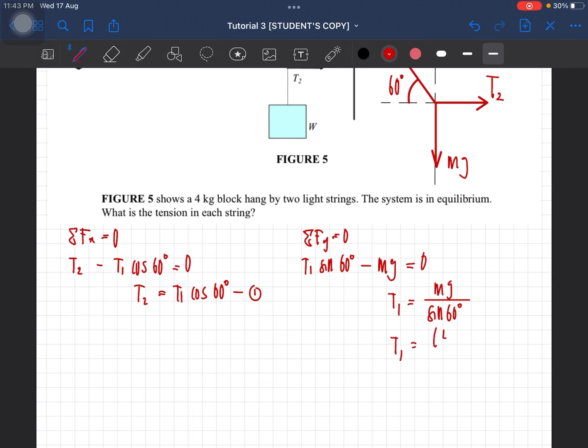So you will get the first tension. So that is 4 kilogram, 9.81 divided by sine 60 degree. So T1 will be equal to 45.3 Newton.